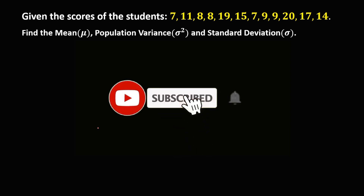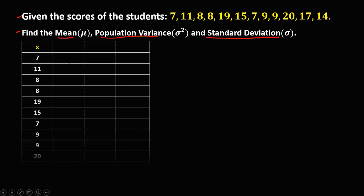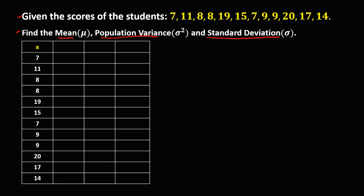Welcome to Mathstoria. Given the scores of the students, find the mean, the population variance, and the standard deviation. We're going to use a table to solve this problem. These are the scores.